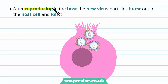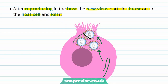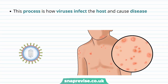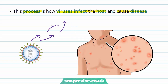Eventually, after going through reproduction inside the host cell, the new virus particles formed end up bursting out of the host cell and in the process they kill it. The virus has become a much larger number of particles, filling up the cell until they need to escape. They burst open and the host cell dies. This process goes on through various cells and tissues of the host, and this is how viruses infect the host and cause disease.